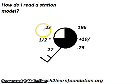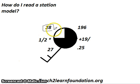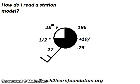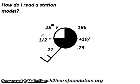We begin our quest to decipher the station model right here in the top left corner with this number 28. This 28 is very simple — it's actually just the degrees Fahrenheit current temperature. Moving on in a counterclockwise form would be the visibility in miles. In this station model, the visibility is only about a half a mile, which is not very far at all.